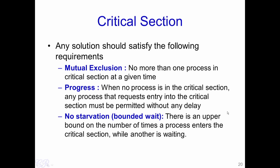Any solution for the critical section problem should satisfy three requirements: (1) mutual exclusion, (2) progress, and (3) no starvation or bounded wait. Mutual exclusion ensures that not more than one process is in the critical section at a given time. Progress ensures that when no process is in the critical section, any process requesting entry must be permitted without delay. Bounded wait means there is an upper bound on the number of times a process enters the critical section while another is waiting — a process should not wait infinitely long to gain access.